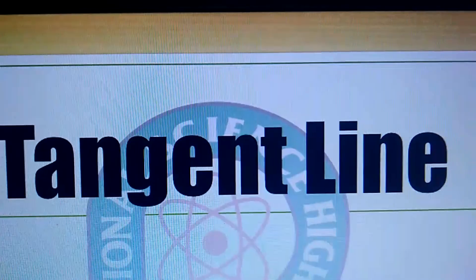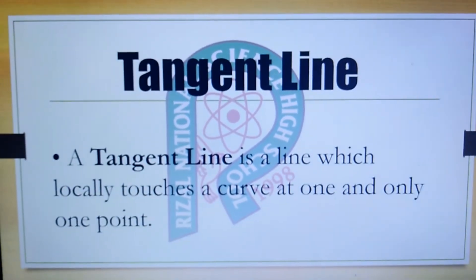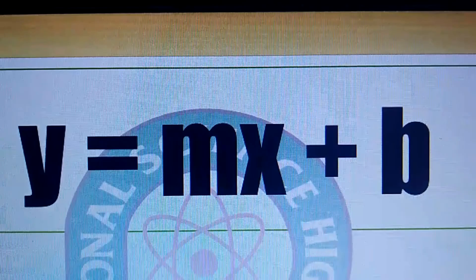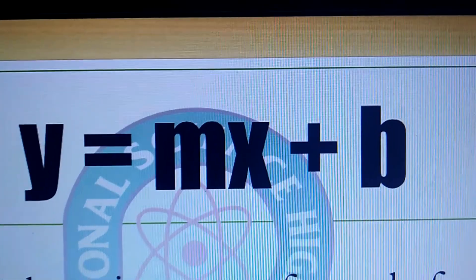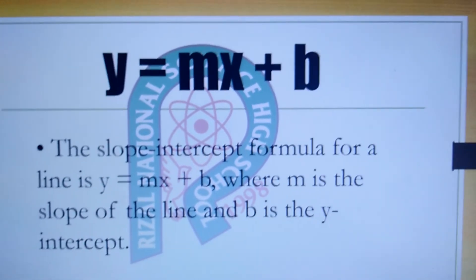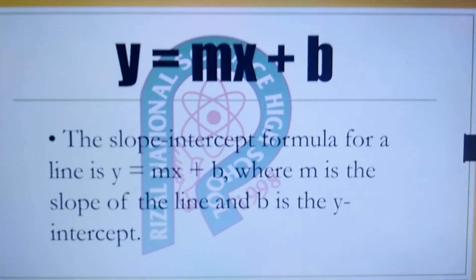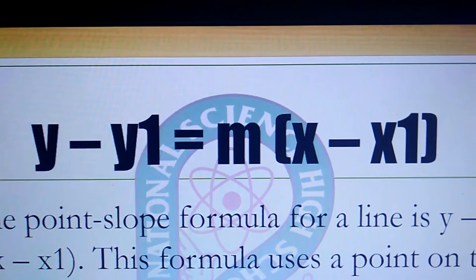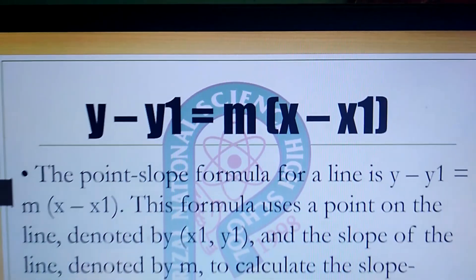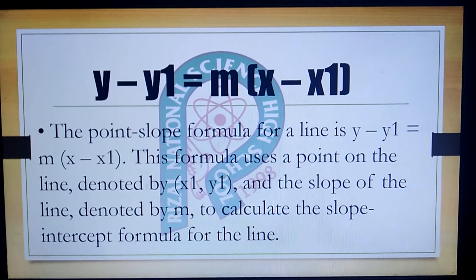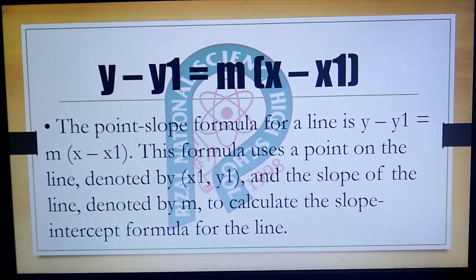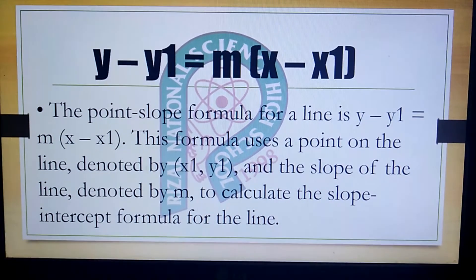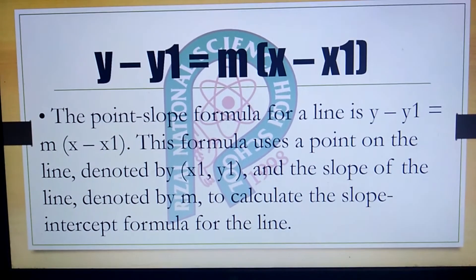First is the tangent line. A tangent line is a line which locally touches a curve at one and only one point. Next is the slope-intercept formula: y equals mx plus b, where m is the slope of the line and b is the y-intercept. And the point-slope formula is y minus y-sub-1 equals m times the quantity of x minus x-sub-1, using a point on the line and the slope m to calculate the slope-intercept formula for the line.